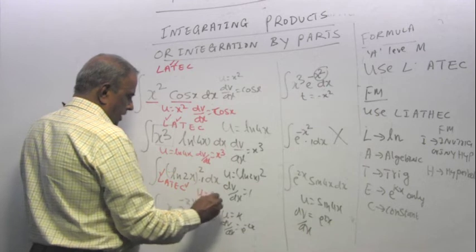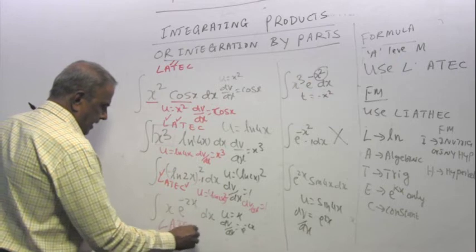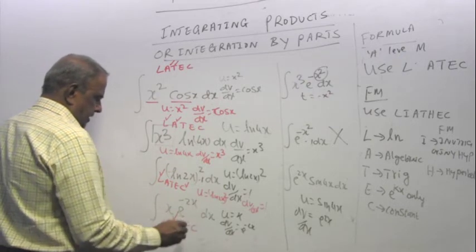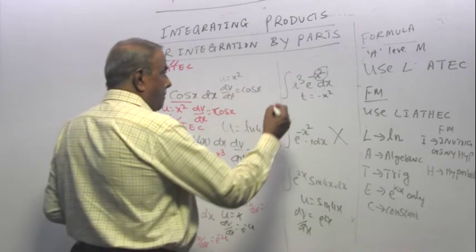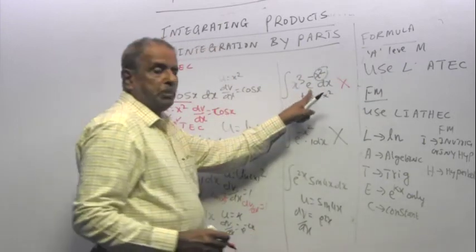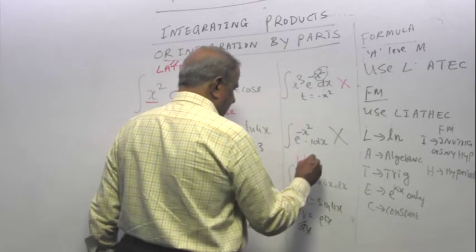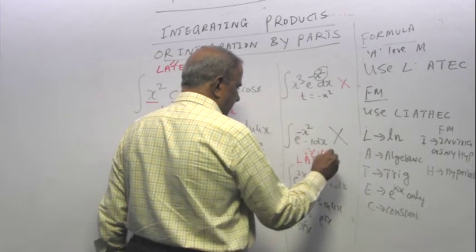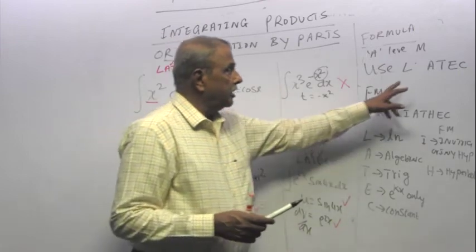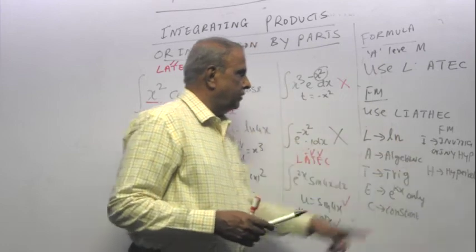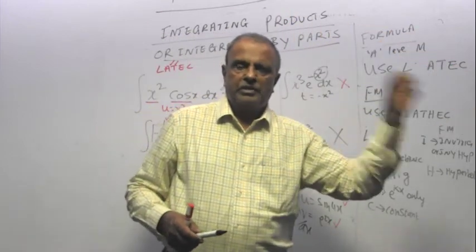Here, LIATEC. It is an algebraic and an exponential. So u is x, dv/dx is e power minus 2x. Here it does not work because e power minus x squared cannot be integrated. So you have to use a substitution, which I will show you later. That is out. Here, LIATEC. I have a T and an E. That is why you are u and dv/dx. So you do not have to worry about which should be u, which should be dv/dx. You can use LIATEC. Or for further math students, if you have a hyperbolic function, then follow the same rule. When you read from left to right, the one that comes first is u, the one that comes next is dv/dx.